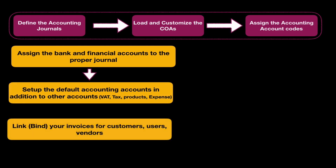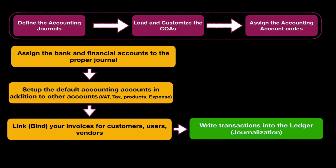After that, we will link invoices. As we saw in the previous lesson, every line of every invoice should be linked to its accounting journal and bound so Dolibarr can process the financial information and give us our reports. We saw how to do that through the admin menu or the user menu.